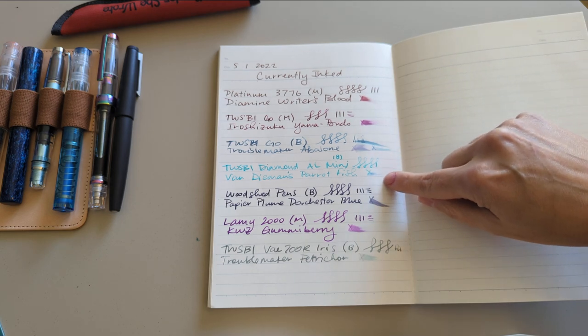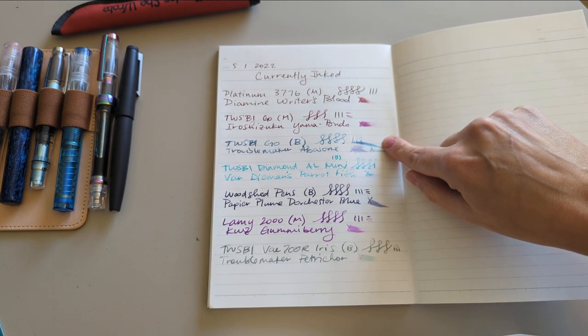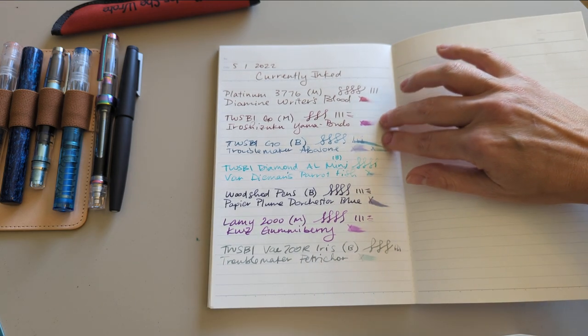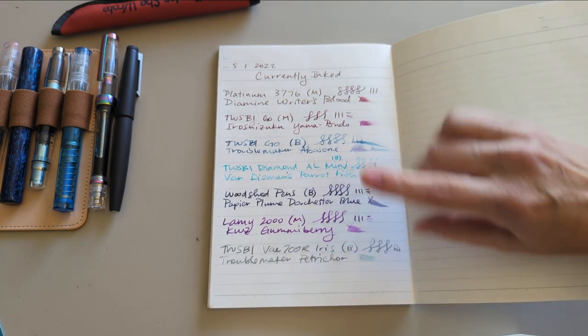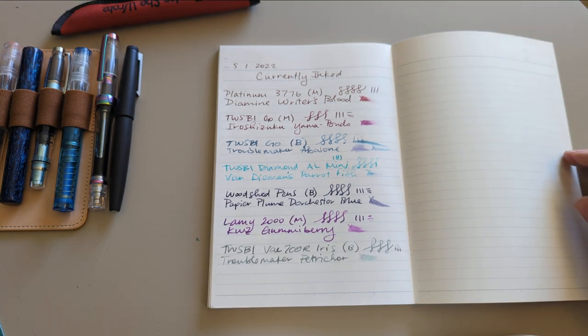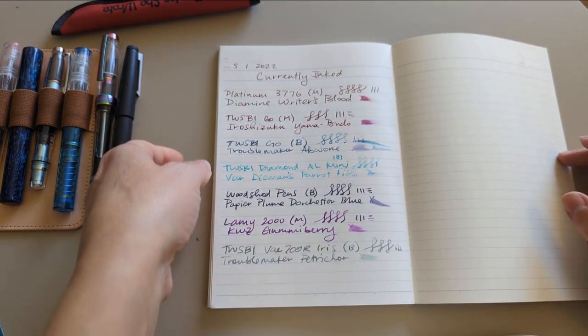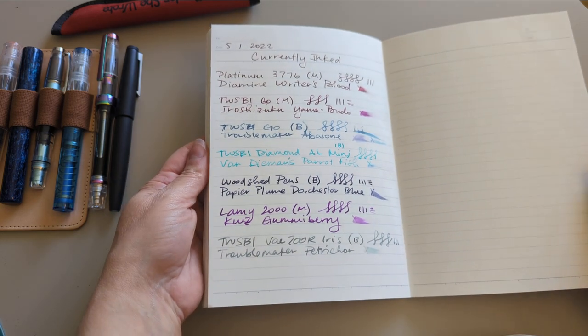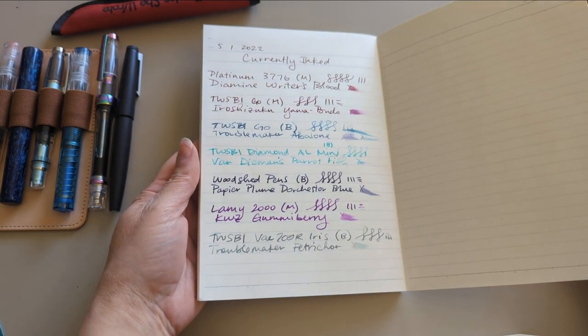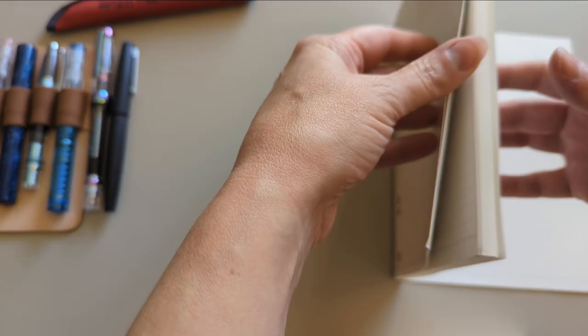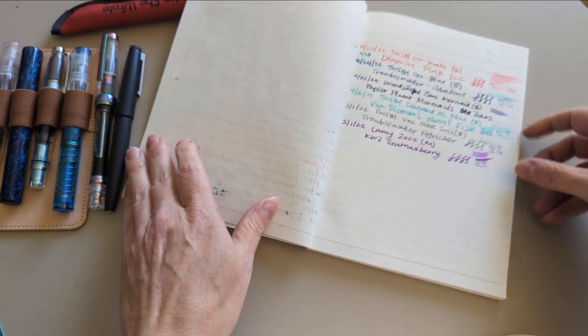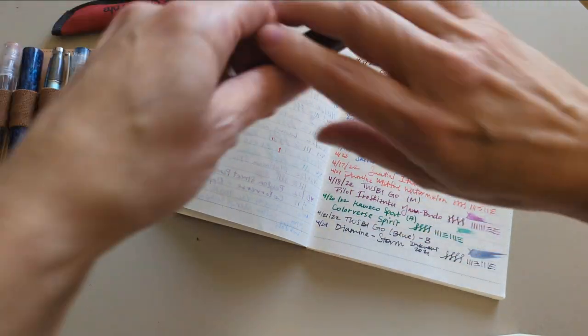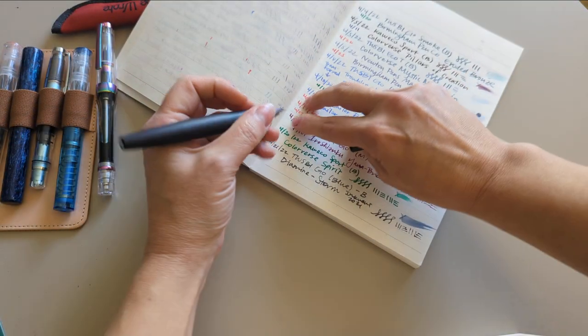So this Diamine is nearly empty, the Yama Budo is nearly empty, so these two will be going soon. I actually just cleaned out my Kaweco Sport that had Colorverse Spirit in it. Quite liked that. Oh, I should write down the date so you can see, here, today.